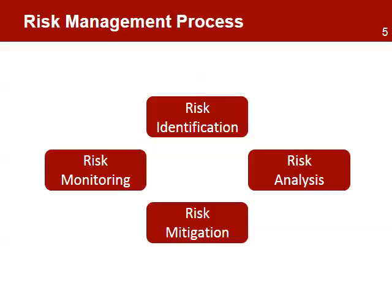Risk Management follows a cyclical process that consists of four steps: the identification of risk, the qualitative and quantitative analysis of risk, the developmental strategies to mitigate risk, and monitoring the risk. The process is continuous — as the project makes progress, new risks will be identified, and with additional information, some risks will need to be analyzed again.